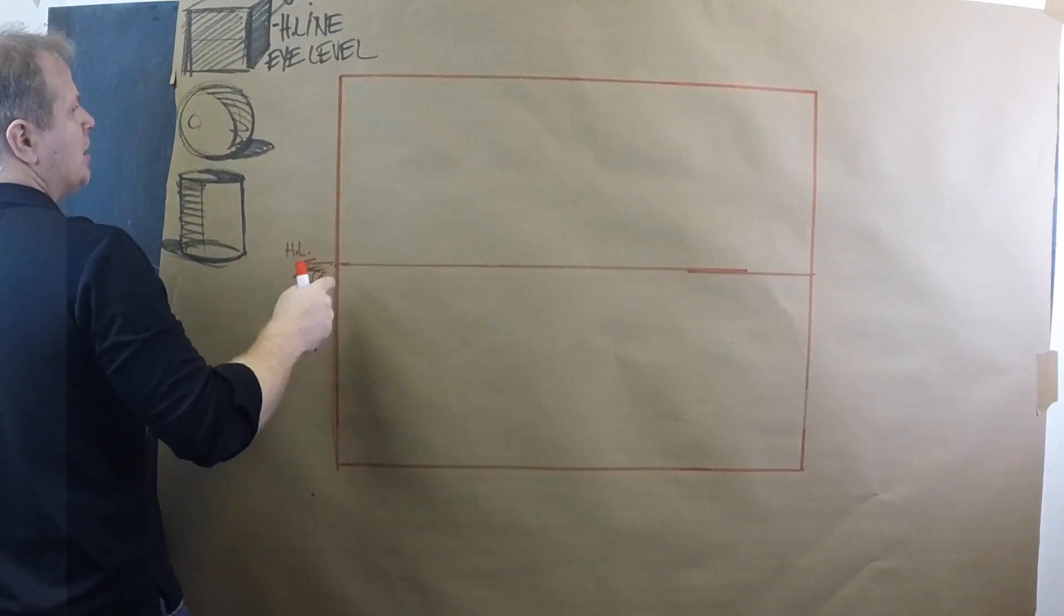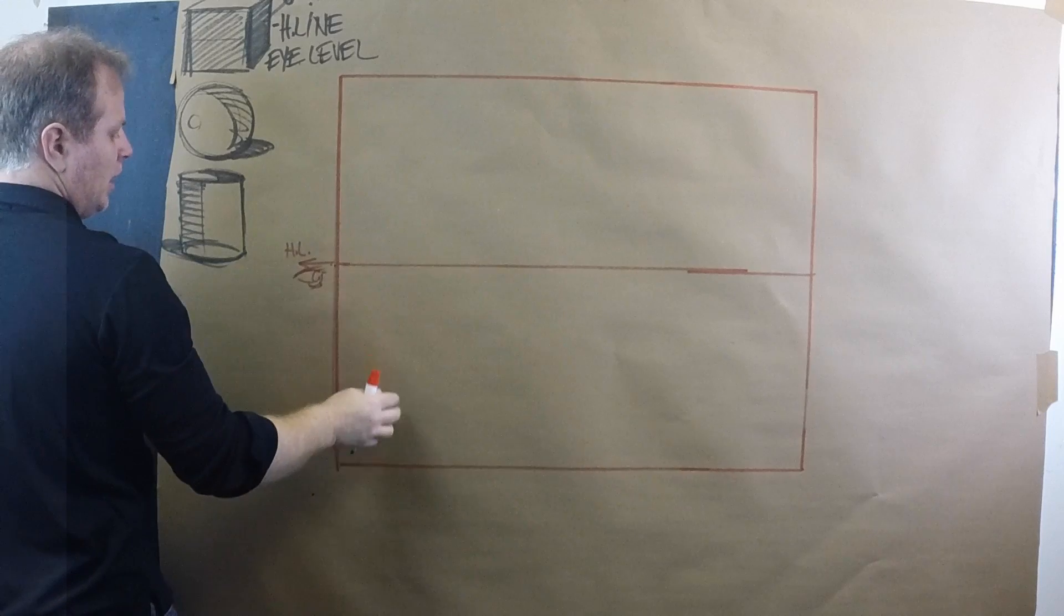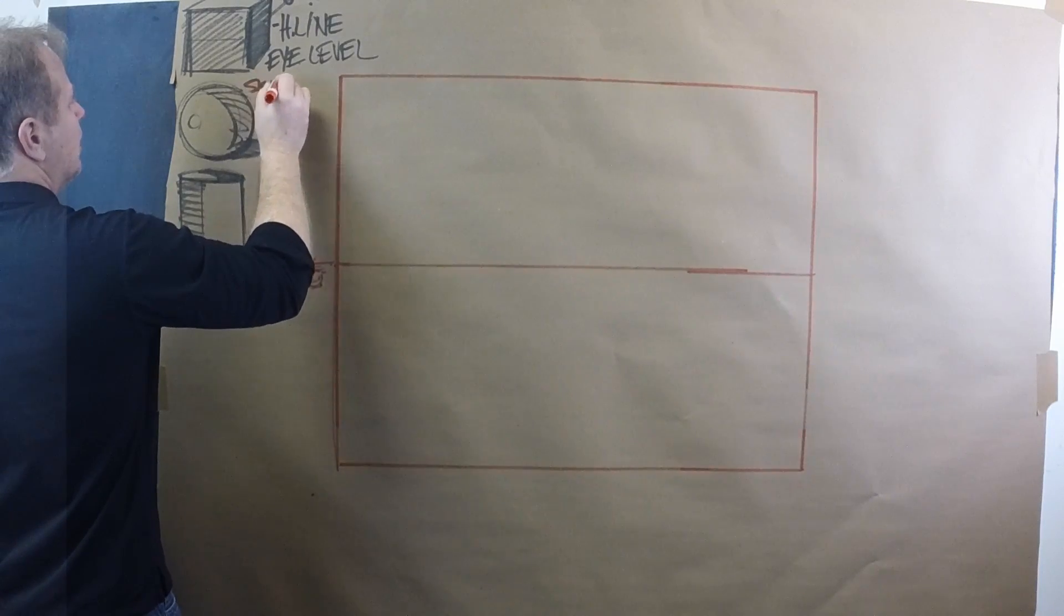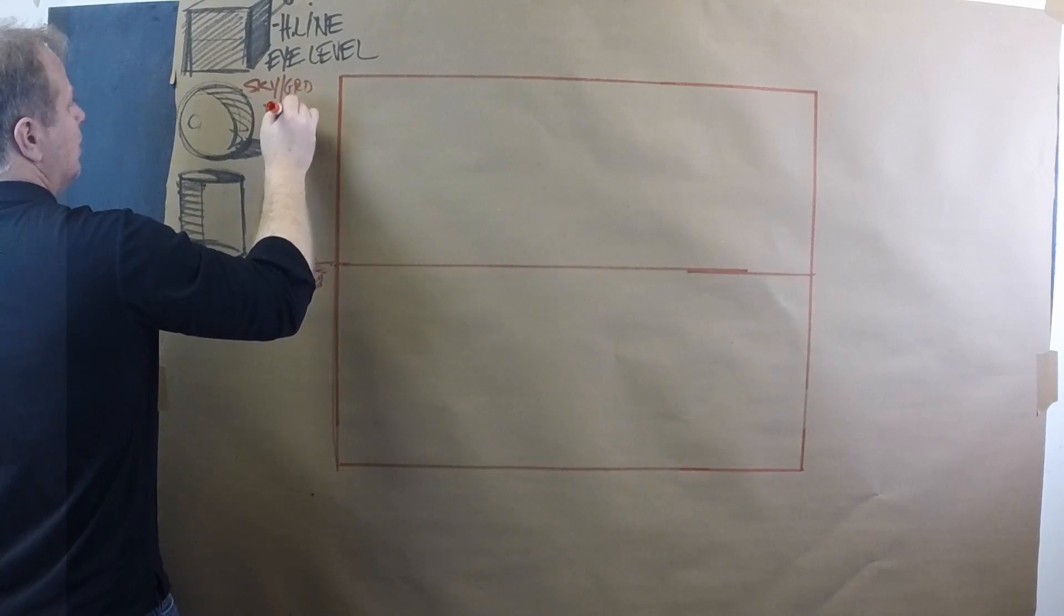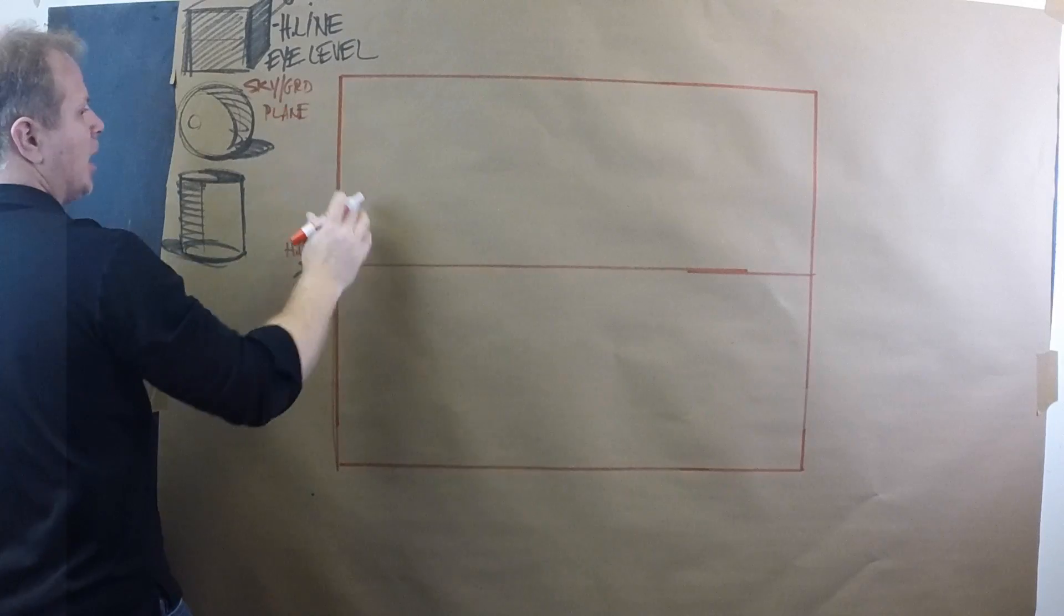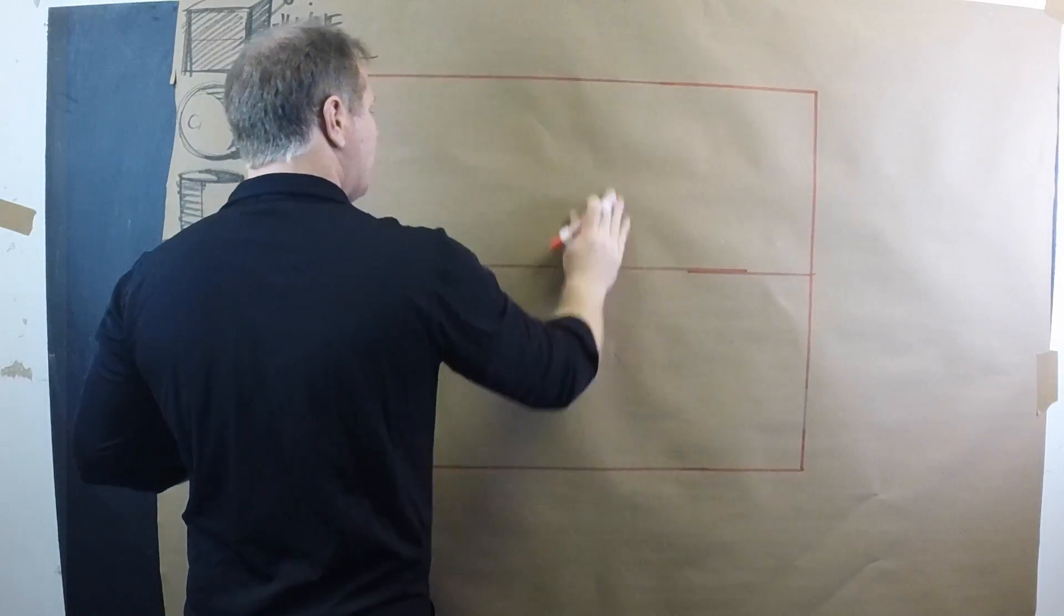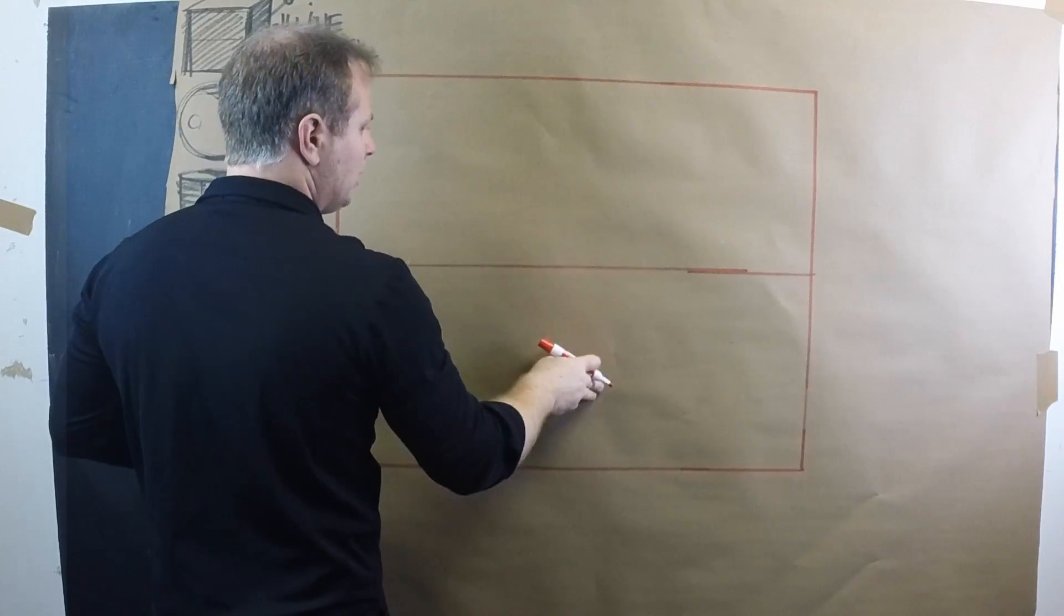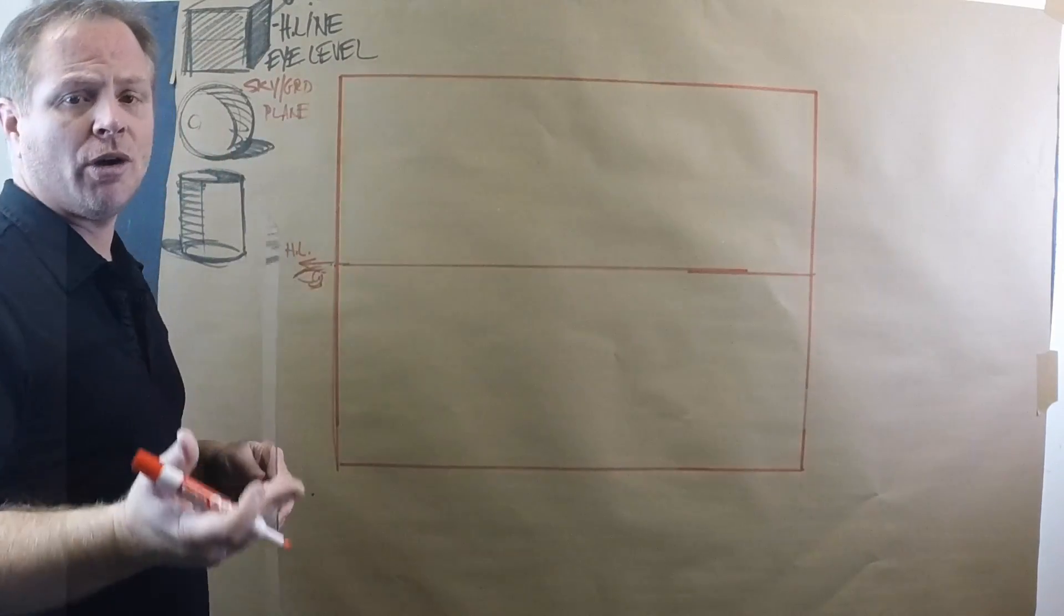This also creates the sky plane and the ground plane. So I'll put that over here, sky and ground plane. Everything that happens up here is sky above eye level, looking up. Everything that happens down below here is looking down, and we're on the ground plane.